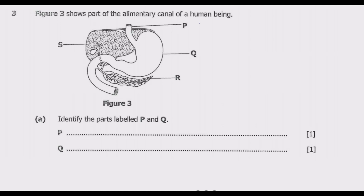A food pipe is also known as the oesophagus, so P is the oesophagus. The primary function of the oesophagus is to transport food and liquids from the mouth to the stomach. Take note of that function.